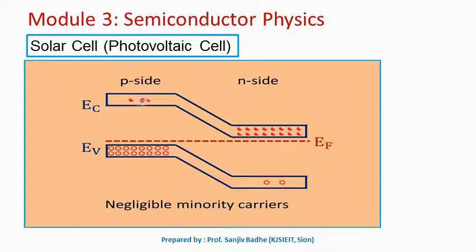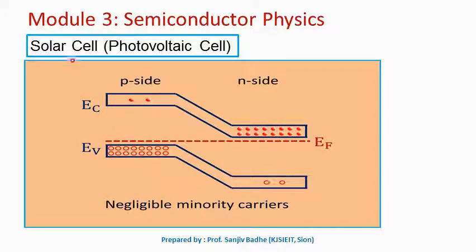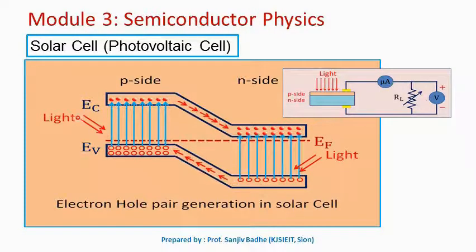To get a larger current, we need a large number of electrons available in the p-side conduction band and a large number of holes in the n-side valence band. This can be done by supplying energy to the electrons in the valence band on both sides so they get excited to the conduction band. In a solar cell, we use light energy for this purpose. When light is incident on the solar cell, the light energy is utilized by electrons in the valence band, which then get excited to the conduction band on the p-side.